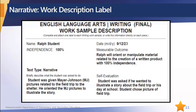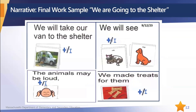Here's an example of a narrative writing sample. The measurable outcome tells how the student participated in the creation of this document: Ralph is going to orient or manipulate materials related to the creation of a written product. The student was given Mayor Johnson pictures related to a field trip to the shelter, and he oriented the Mayor Johnson pictures to illustrate the story. Although this involves a motor skill, the materials he's manipulating are his words — this is how the student expresses himself. It's not about writing or keyboarding, but a motor skill is allowed if it's part of the student's expressive language.